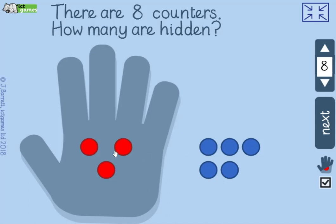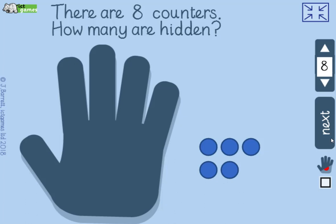Also, if I'm working on eight and building up the mastery of the facts for 8, I can keep pressing next and it will show me different variations where I've got eight counters altogether and some are hidden.